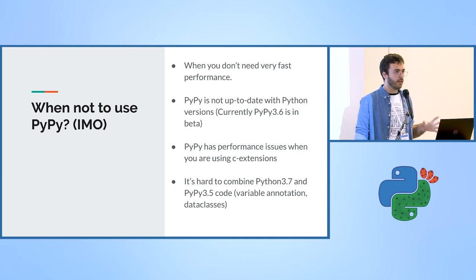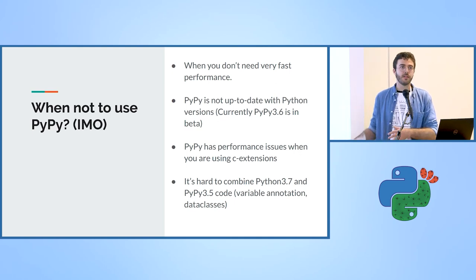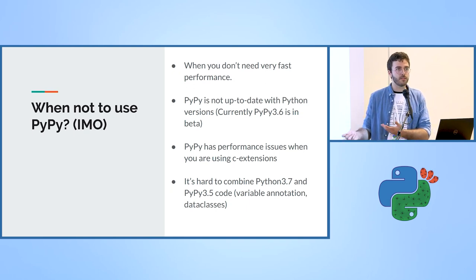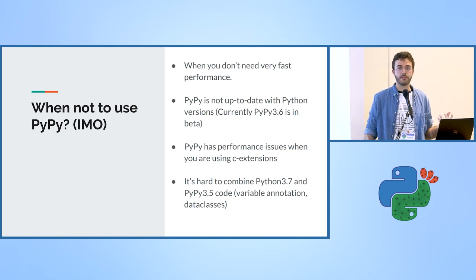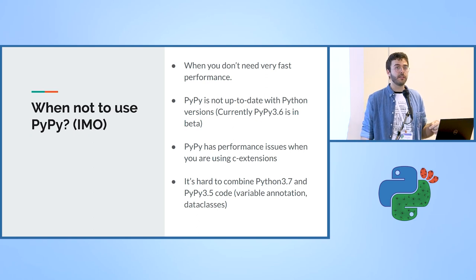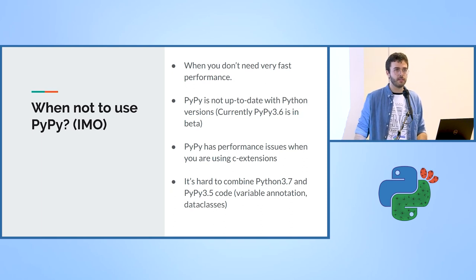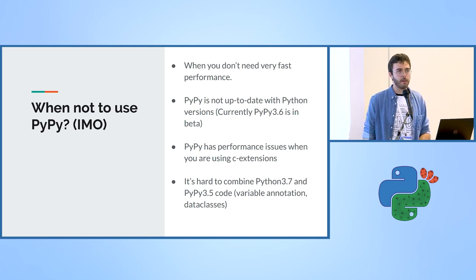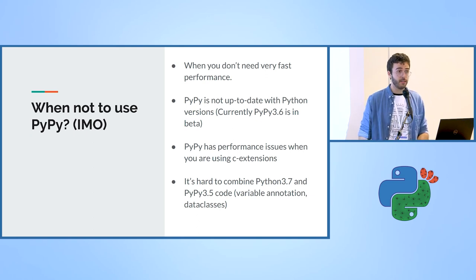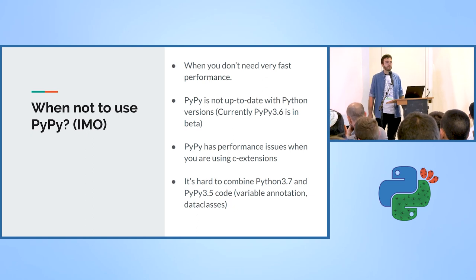When not to use PyPy: when you don't need a super fast application, because CPython is fast enough for most things. Also understand that PyPy is currently on Python 3.6 beta — it's not up to date with the current Python spec. It slowly gains ground but it takes time, and it's hard to combine new Python versions with PyPy. I can't use data classes, variable annotations, and other neat newer features. Thank you — let's talk outside!